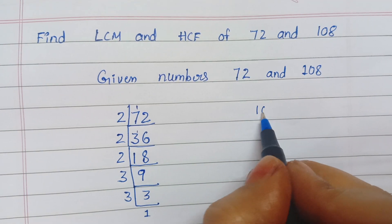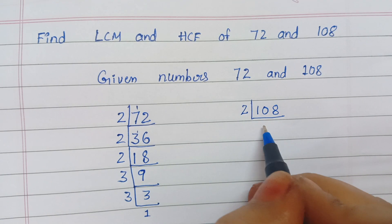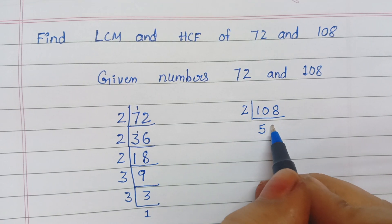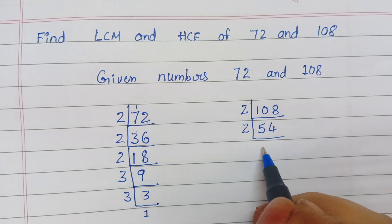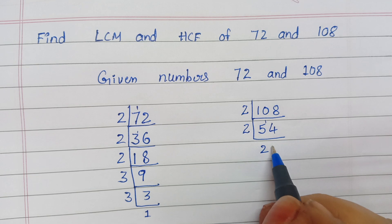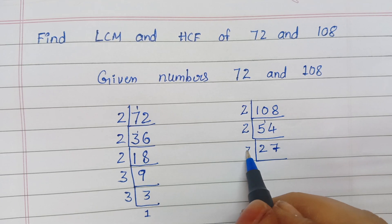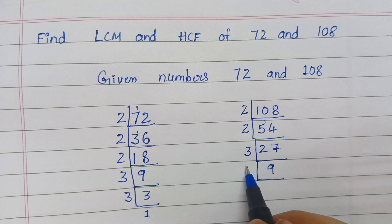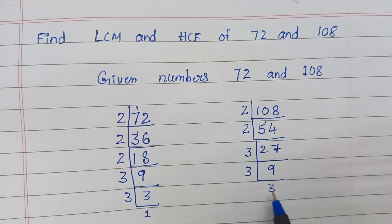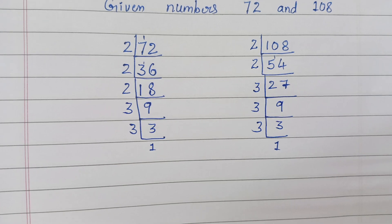Now consider the other number, 108. Using the 2 table: 2 divides 108, 2 divides 54, 2 divides 27. Here 2 table is not possible. Going to the 3 table: 3 divides 27, then 3 divides 9, then 3 divides 3, giving 1. Now write the prime factorization.